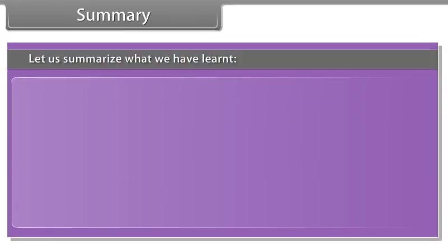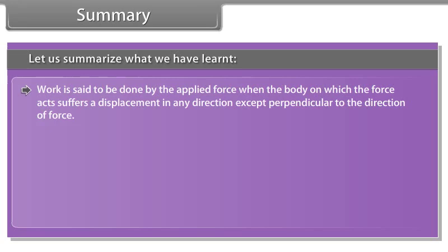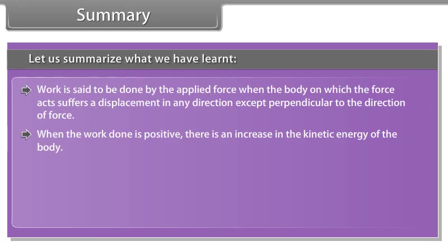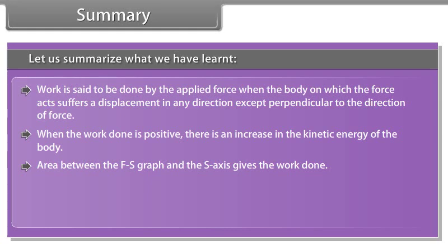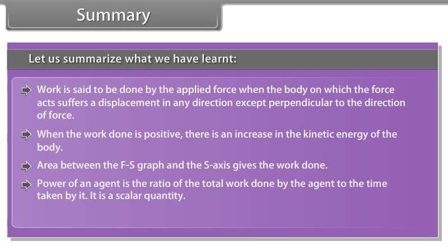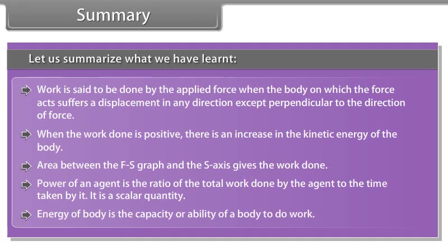Summary. Let us summarize what we have learned. Work is said to be done by the applied forces when the body on which the force acts suffers a displacement in any direction except perpendicular to the direction of force. When the work done is positive, there is an increase in the kinetic energy of the body. Area between the F-S graph and the S-axis gives the work done. Power of an agent is the ratio of the total work done by the agent to the time taken by it. It is a scalar quantity.